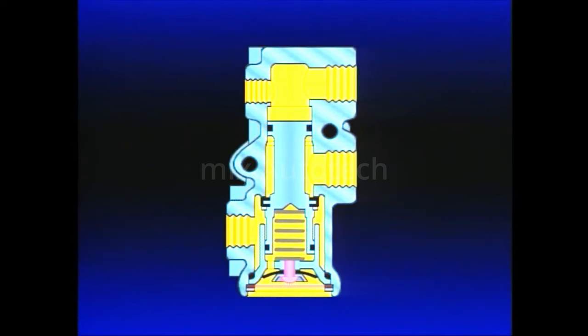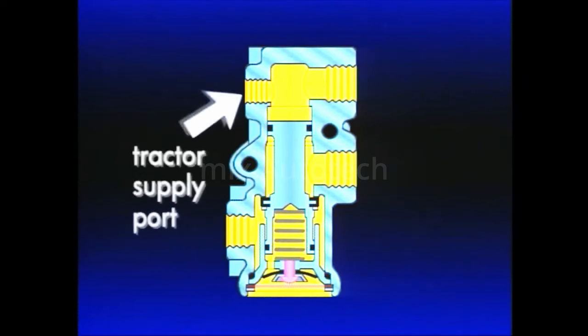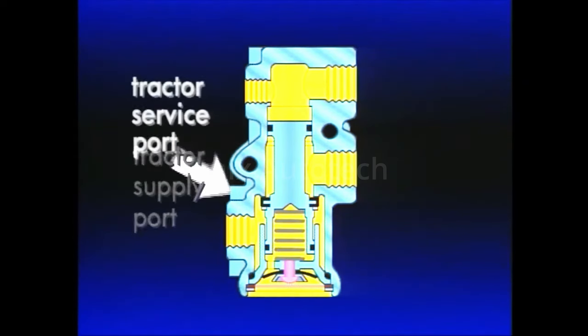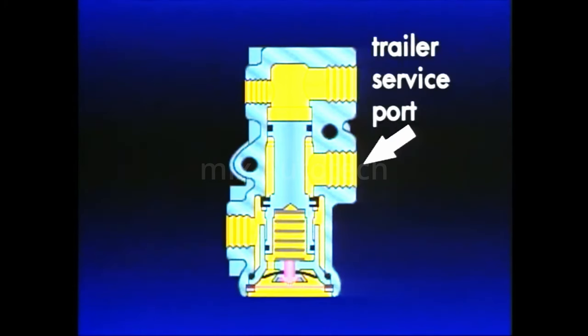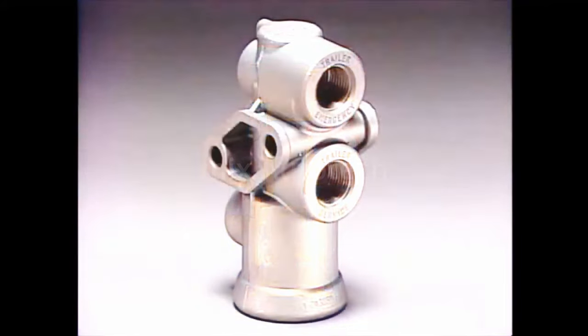There are four air connections on the TP3: the tractor supply and tractor service ports on one side, and trailer supply and trailer service ports on the opposite side of the body. Each is identified with cast-in lettering.